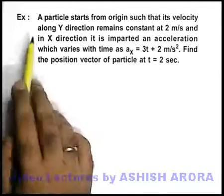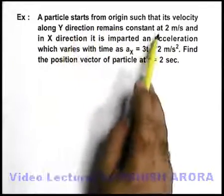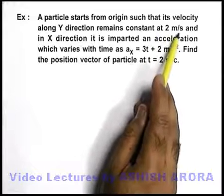In this example, we are given that the particle starts from origin, such that its velocity along y direction remains constant at 2 meters per second.